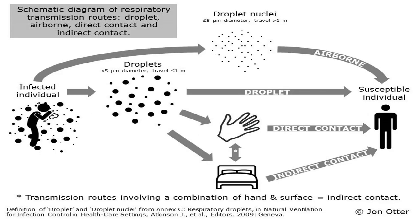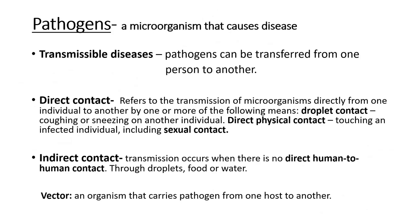This is a schematic diagram showing how the transmission route works, transferring from one host to another. There are a few types of direct and indirect contact. For direct contact: blood, body fluids, touching, or kissing are considered direct contact. For indirect contact, it can be contaminated surfaces, droplet infection, or food from animals.